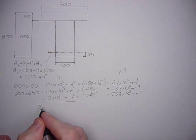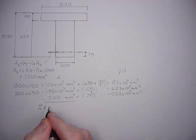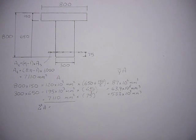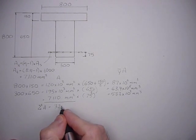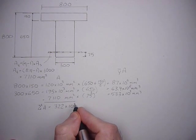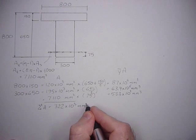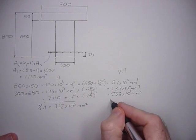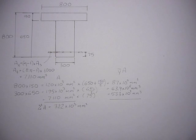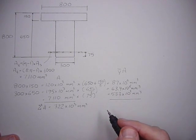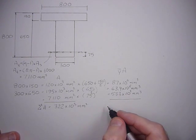The sum of the areas is equal to 120 times 10 to the third plus 195 times 10 to the third plus 7110. That's 322 times 10 to the third millimeter squared. And we do the same with the Y bar areas: 87 times 10 to the sixth plus 63.4 times 10 to the sixth plus 533 times 10 to the third, which comes to 151 times 10 to the sixth millimeters cubed.